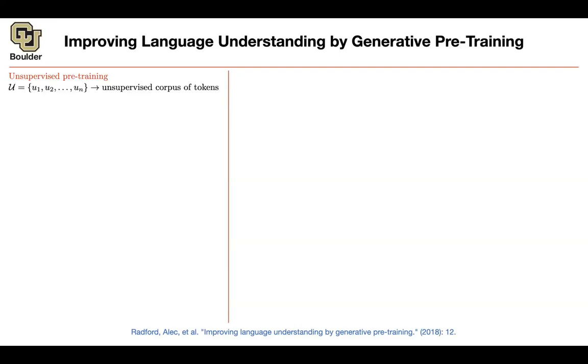Again, you have unsupervised pre-training. That's your corpus. Your task is, given the context, predict the next word. Now you're going to have a transformer decoder rather than an LSTM.